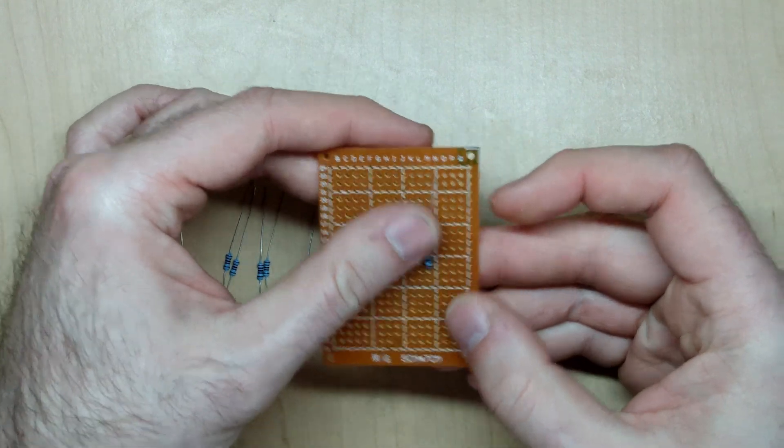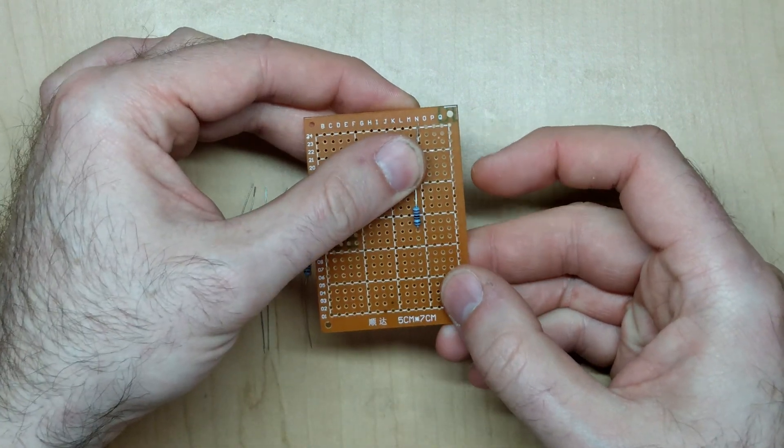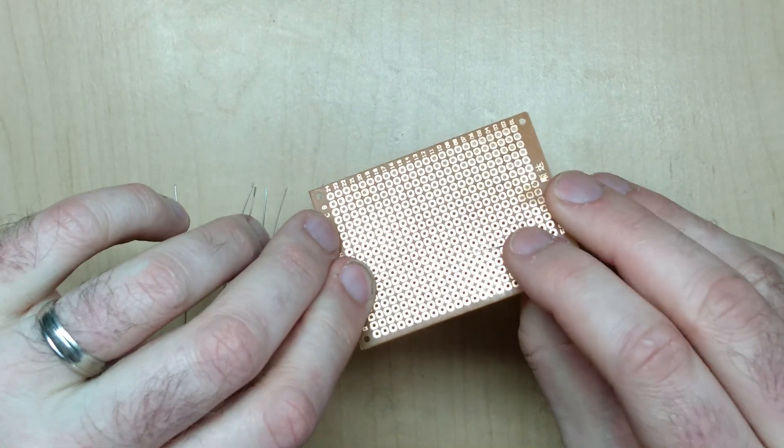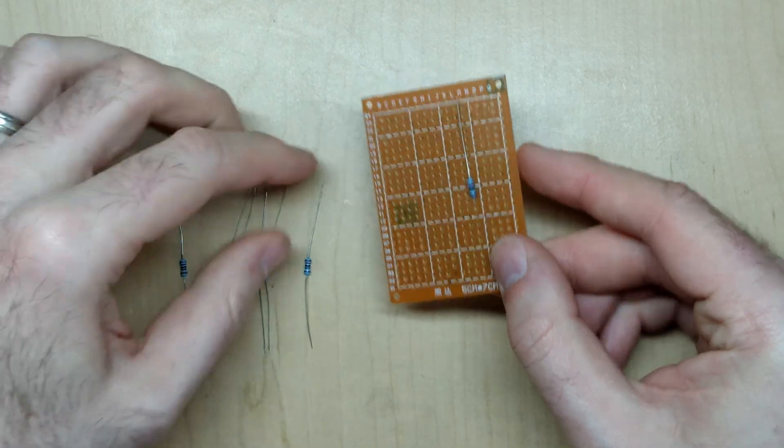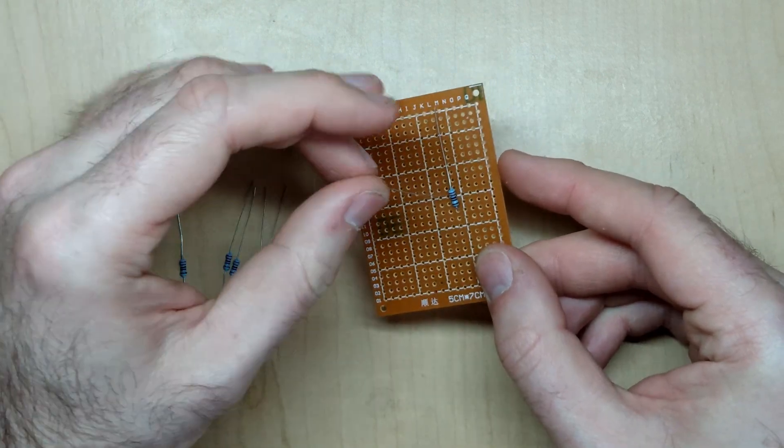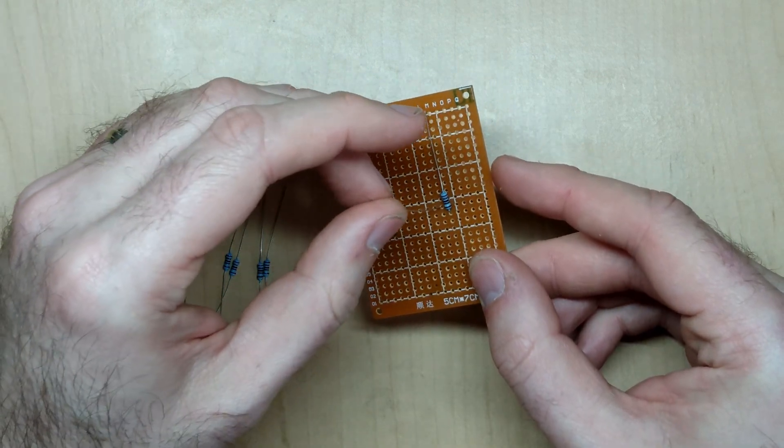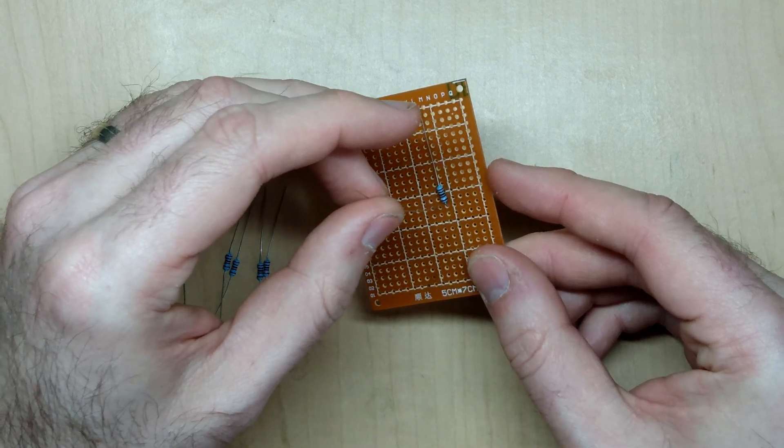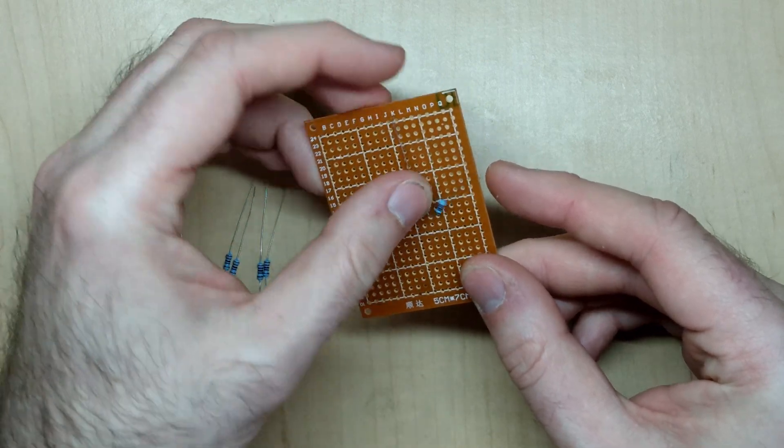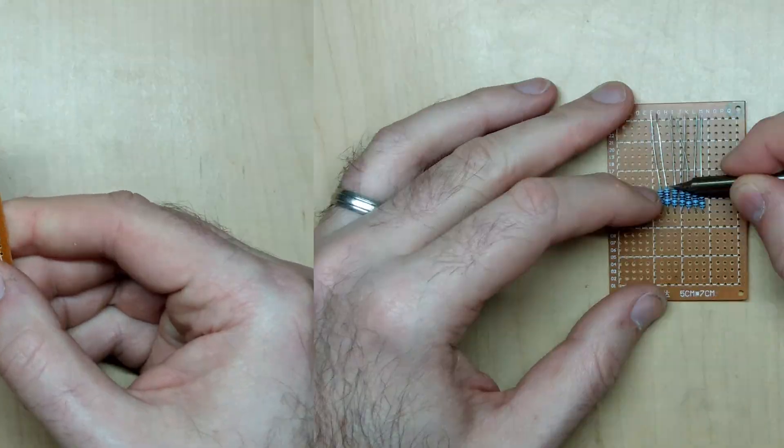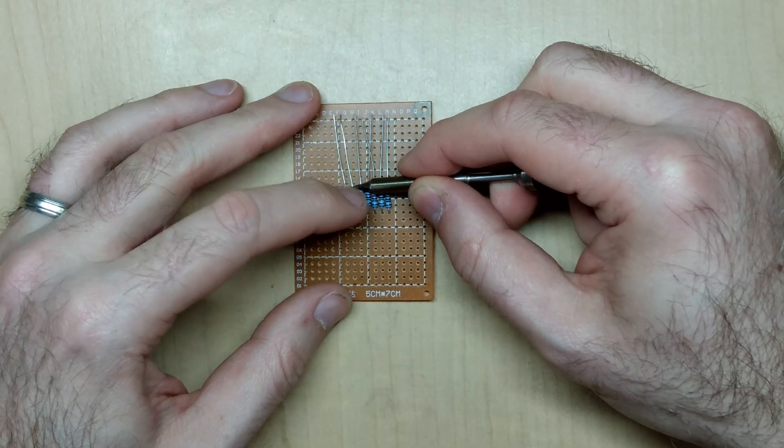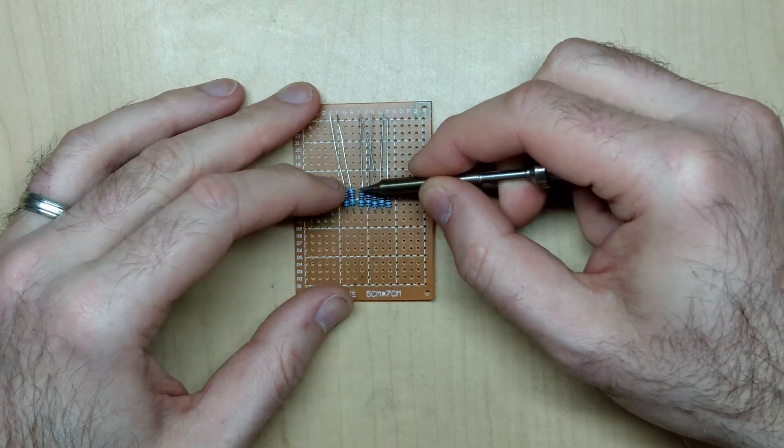And what I'm going to do is as I put them down I'm going to fold the back of the lead so that it stays in place and this thing is not going to move up and down. I'm just going to repeat this for all the resistors and make sure that they're adjacent to one another.